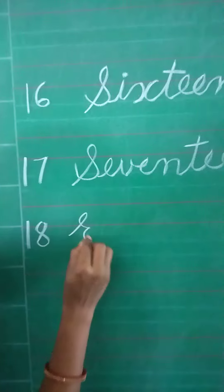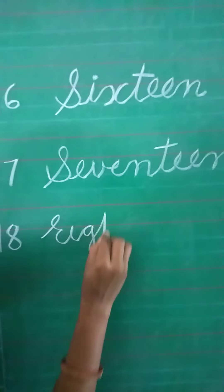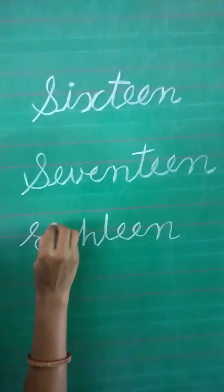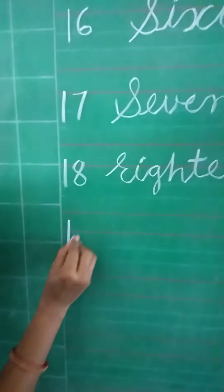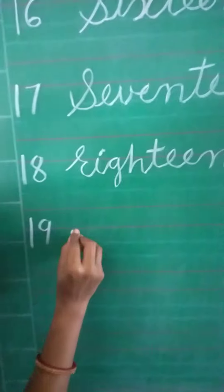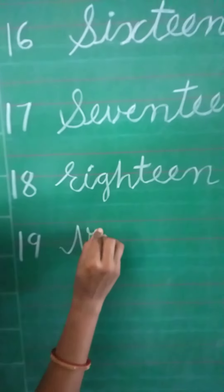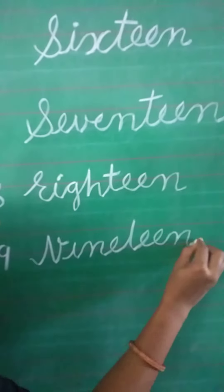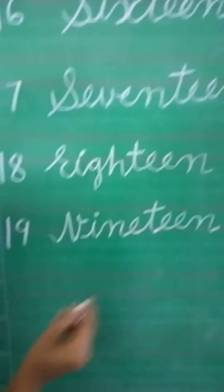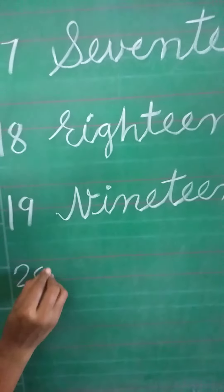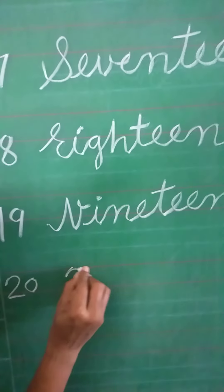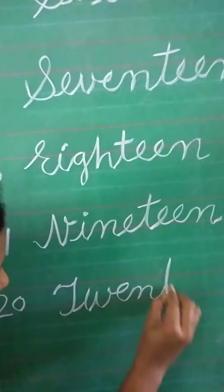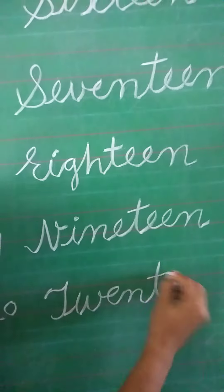Write a spelling: E-I-G-H-T-E-E-N, 18. 19 number spelling: N-I-N-E-T-E-E-N, 19. 20 — write a spelling: T-W-E-N-T-Y, 20. Okay.